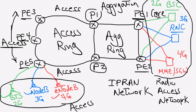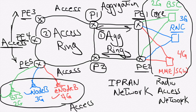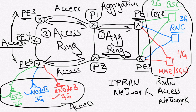The IPRAN network has different levels. The first level is the aggregation ring and the second level is the access ring. With the HVPN approach, we can extend MPLS functionality to the access ring — running MPLS in the aggregation ring and MPLS in the access ring. HVPN means we have different levels of VPN: the first level for the aggregation ring and the second level for the access ring.